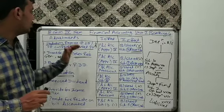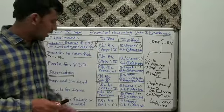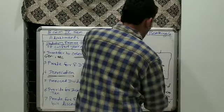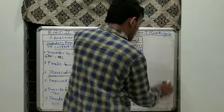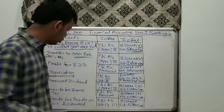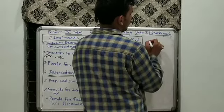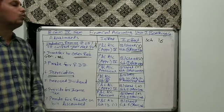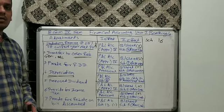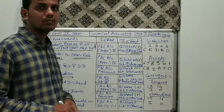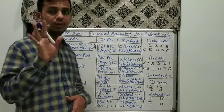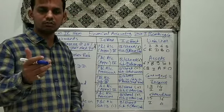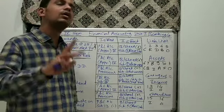Before we sum up, we must clearly remember the schedules. We need to keep in mind the various numbers and names of schedules and where each one appears. For liabilities we have 5 schedules, for assets we have 6 schedules, for contingent liability we have 1 schedule, and for income and expenditure we have 2 schedules respectively.